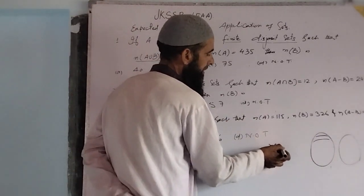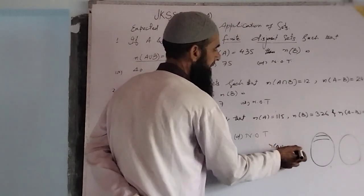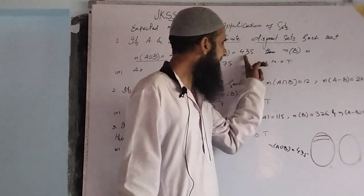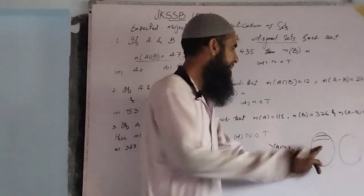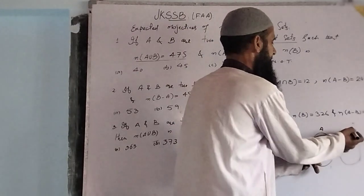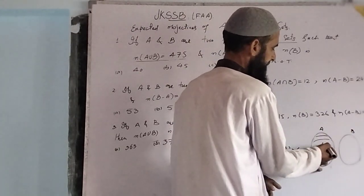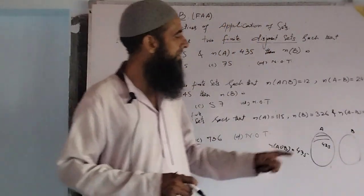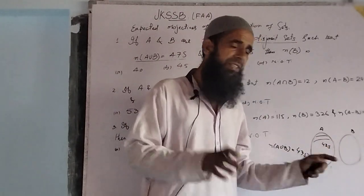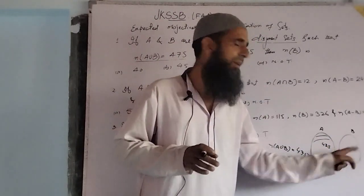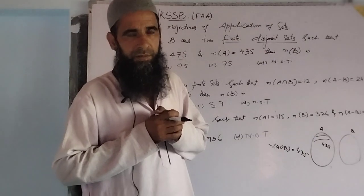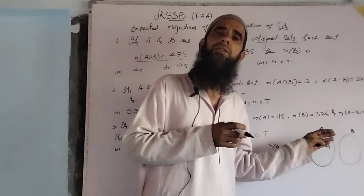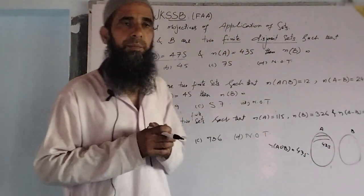Number of elements in A∪B is 475 — that is given to us. Number of elements in A is 435. So the elements of B are what we need to find. This type of question can be asked in the exam, and we can easily give the solution.